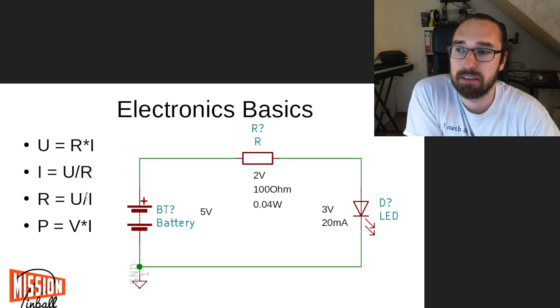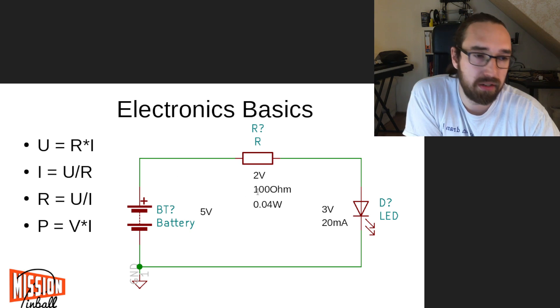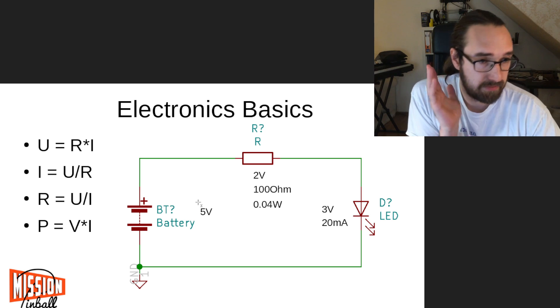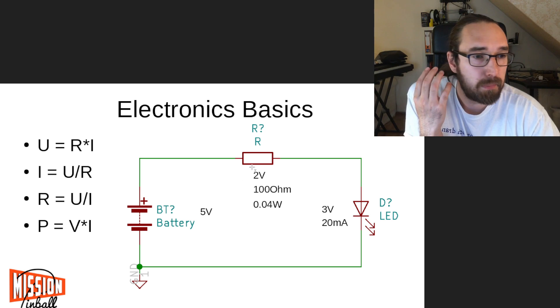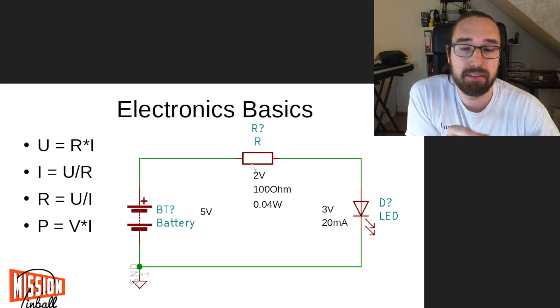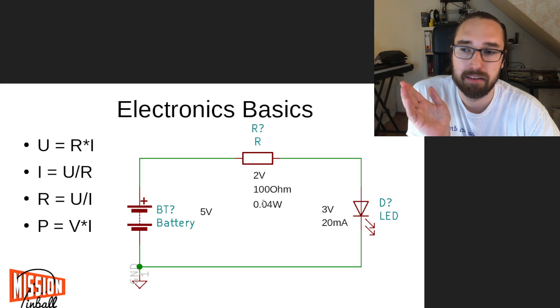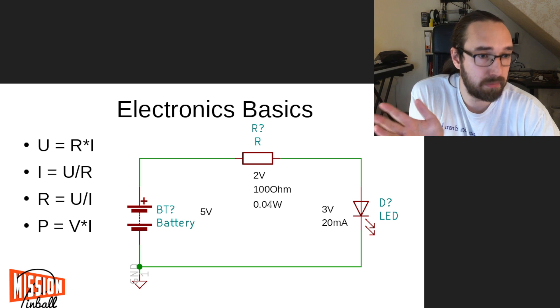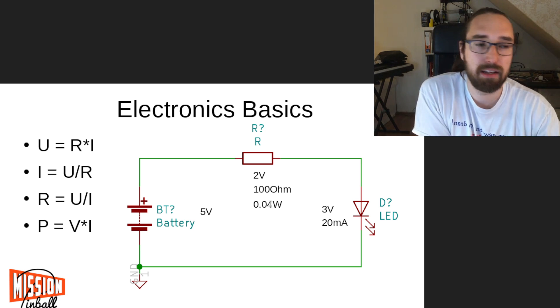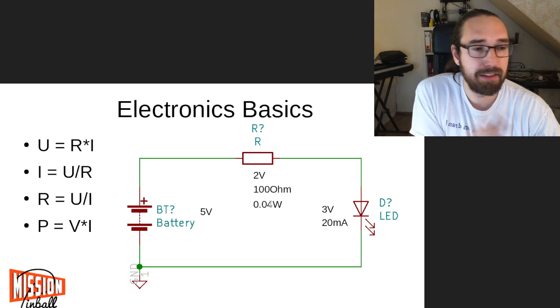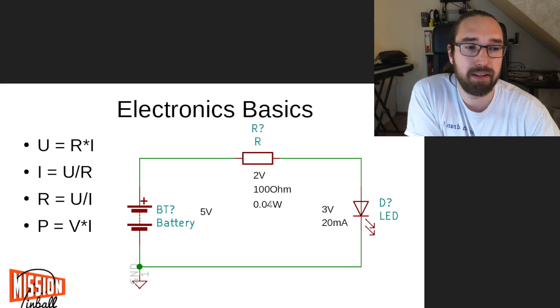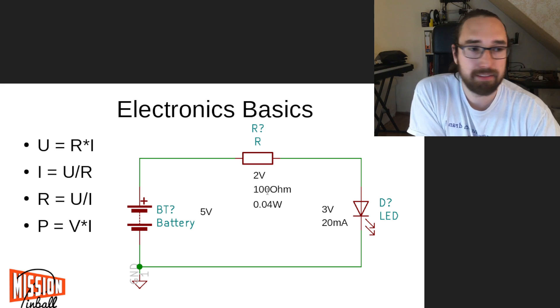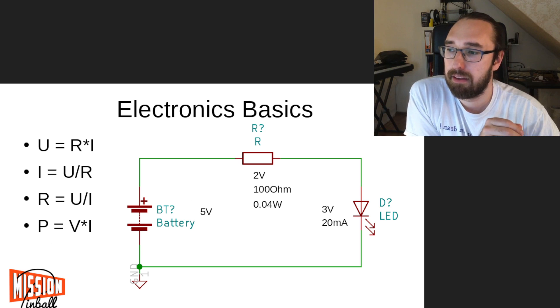That can be calculated with that - R is 2 volts divided by 20 milliamps, and then we get 100 ohms. That's very basic. Then we can also calculate how much heat will dissipate. This resistor has 2 volts and it will have 20 milliamps. If we multiply that, it's 0.04 watts - that's not much, that's fine. A normal resistor, a quarter watt, is what it can generate. That's for one simple LED.